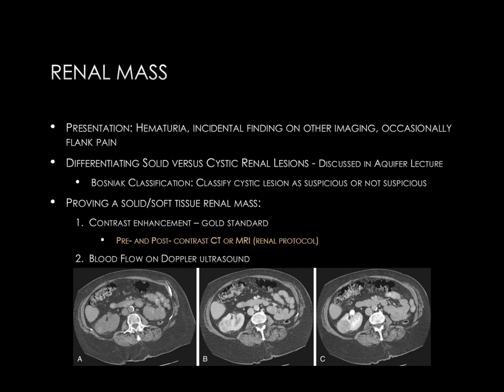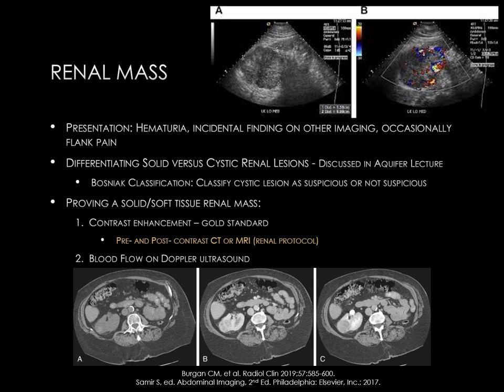An alternate, less commonly used method would be demonstrating blood flow on color Doppler ultrasound within a renal mass. There is an exophytic mass at the upper portion of the kidney. On the color Doppler image you can clearly see small blood vessels within the mass, indicating a solid mass.